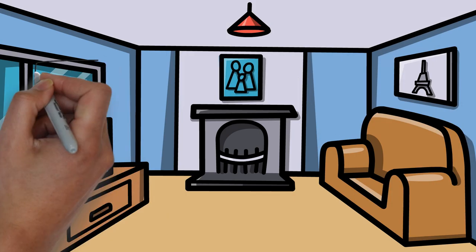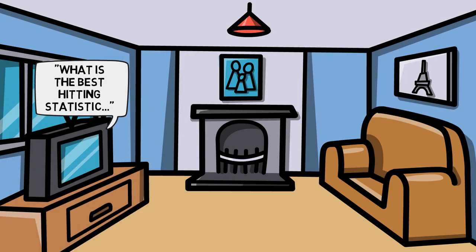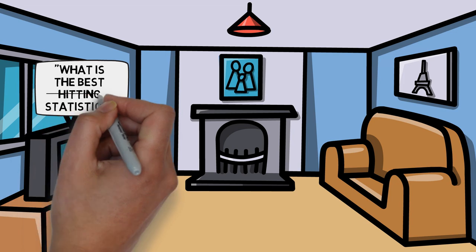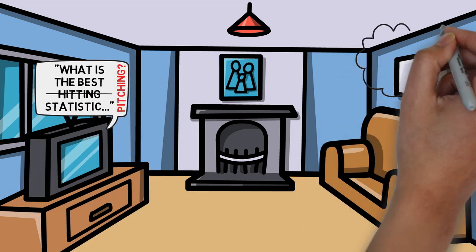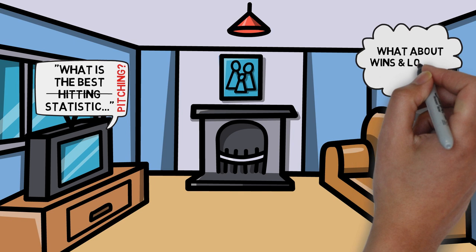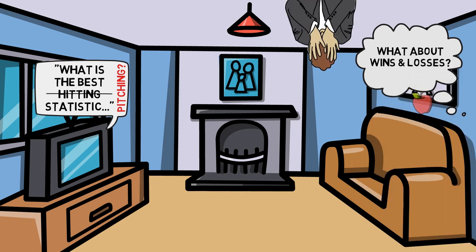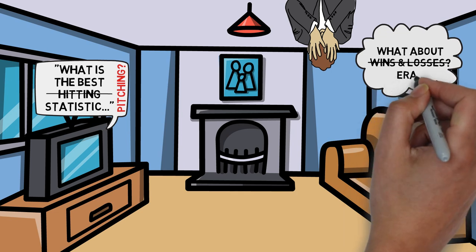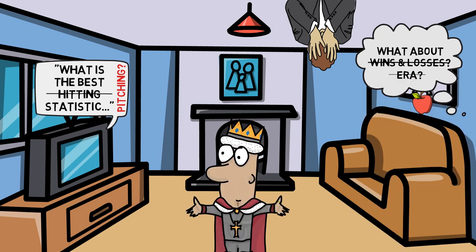In last week's video, we dove deep into what I think is the best statistic that you can use to evaluate hitters. But what about pitchers? Many of today's commonly used statistics have some major flaws. And while there are a couple that come to mind, I'm not going to pick on the low-hanging fruit here. So in today's video, we tackle those flaws, as well as explaining what to me is the best pitching statistic: FIP.